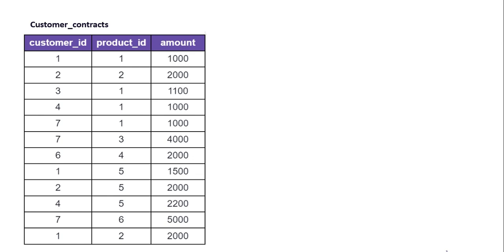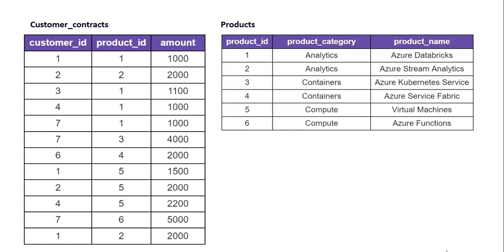The second table is the products table, which contains product ID, product category, and product name. Our task is to identify the customer IDs of customers who have purchased at least one product from every product category. Looking at the product category column, there are three distinct categories: Analytics, Containers, and Compute.